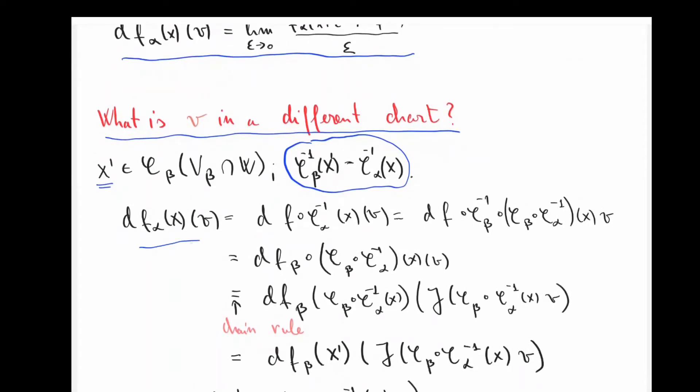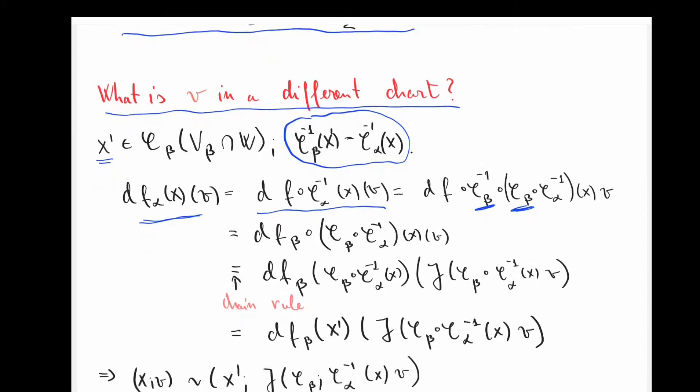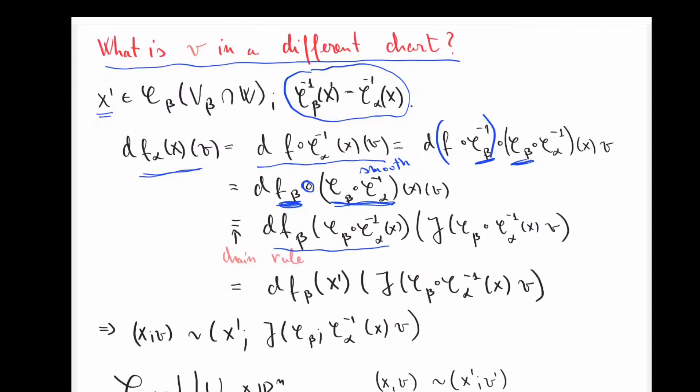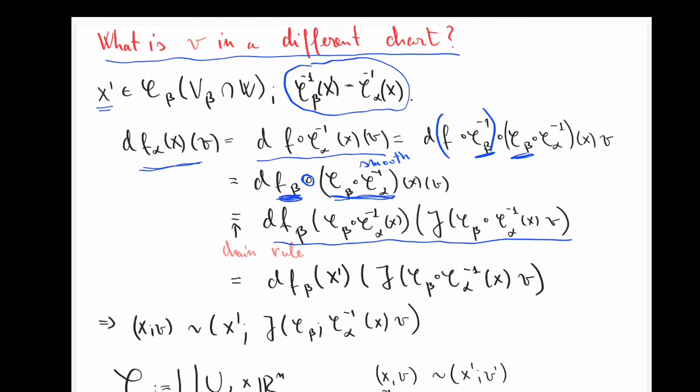So now, let me just expand this directional derivative. So df alpha in the direction of v. So by definition, this is what that looks like. Now, I'm going to stick an additional beta and its inverse somewhere in between. That's not going to change anything. But if you look at this expression here, that's nothing but f beta, whereas the expression here, this is a smooth map. So in particular, I can apply the chain rule here to this composition, and that will give me this expression here.